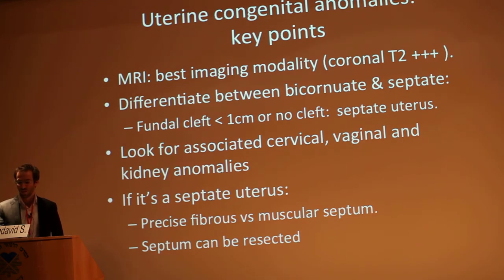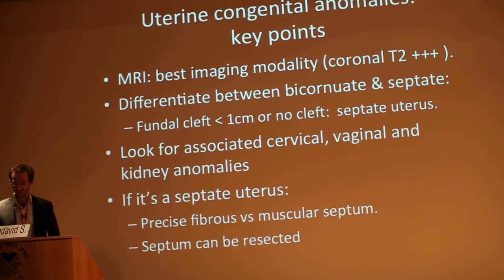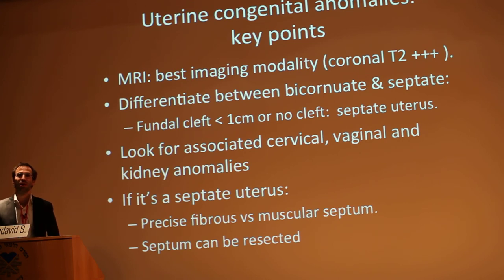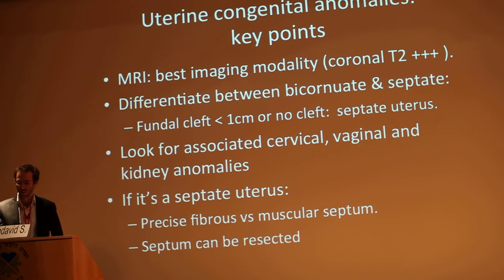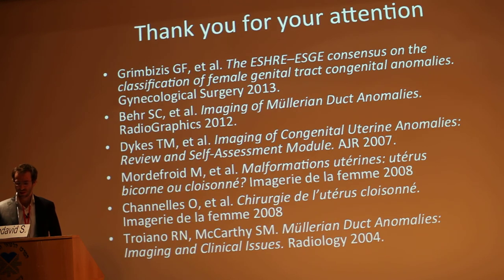What are the key points when assessing uterine congenital anomalies? First, MRI is the best imaging tool, and your protocol should absolutely include a large T2 with a large field of view covering the kidneys and coronal sequences parallel to the axis of the cavity. The key point is to differentiate between bicornuate and septate uterus: the presence of a fundal cleft over 1 cm is indicative of bicornuate. You should look for associated cervical, vaginal, and kidney anomalies. If it is a septate uterus, you must try to determine whether the septum is fibrous or muscular, and keep in mind that the septum can be resected.